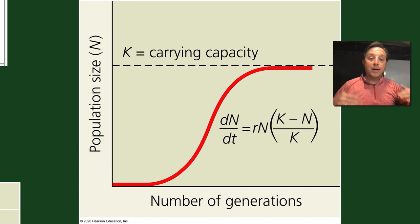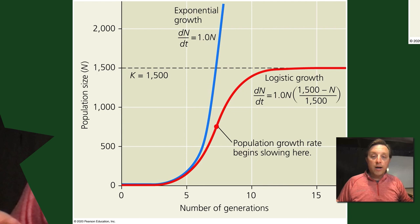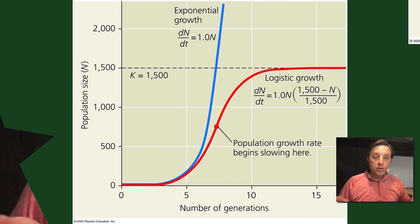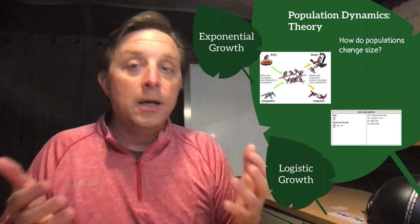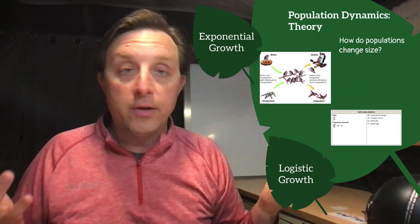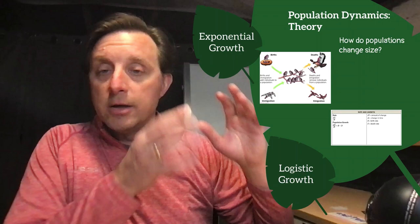Comparing both models on one graph: the exponential growth model is in blue and the logistic growth model in red with a carrying capacity of 1,500. You may be asked to use those formulas or to analyze graphs to calculate carrying capacity or growth rate — simply looking at the slope of the line. These are the theoretical models of population growth.